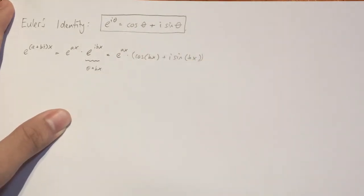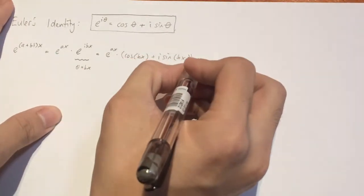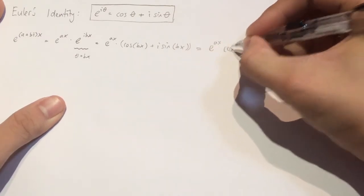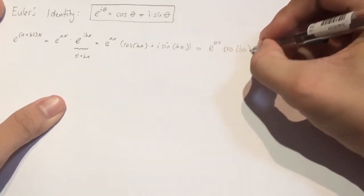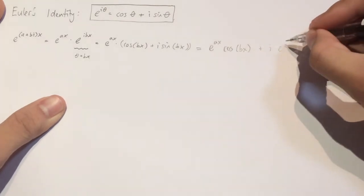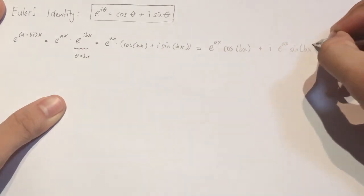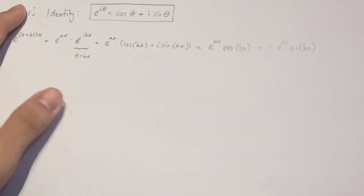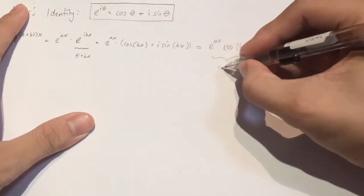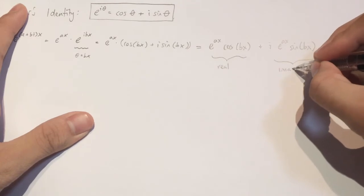And so now I will attempt to expand this to make the points even clearer. So this would become e to the ax times cosine of bx plus i times e to the ax times sine of bx. So what you can see here is there are two bits. This bit is a real number and this bit is an imaginary number.